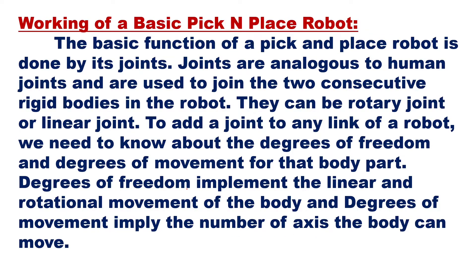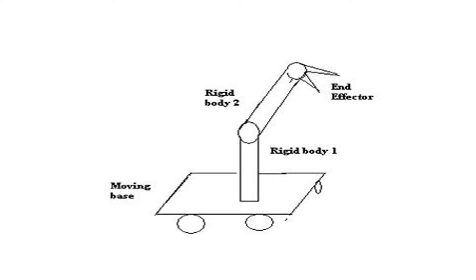Now, how does a pick and place robot work? The basic function is carried out by its joints — analogous to human joints — which join two consecutive rigid bodies in the robot. Joints can be rotary or linear. To add a joint to any link, we need to know the degrees of freedom and degrees of movement: how much a part can move. Degrees of freedom implement linear and rotational movement, while degrees of movement imply the number of axes the body can move.